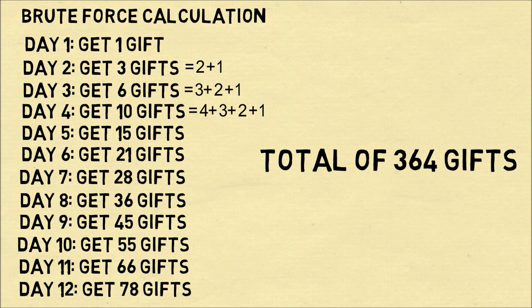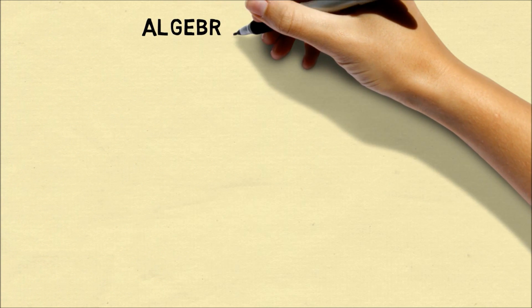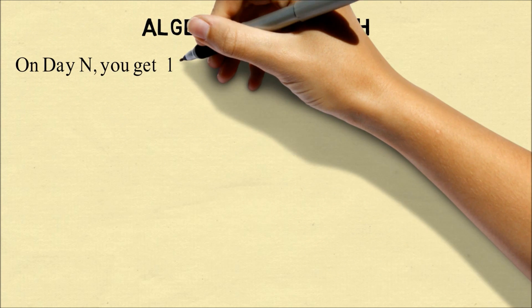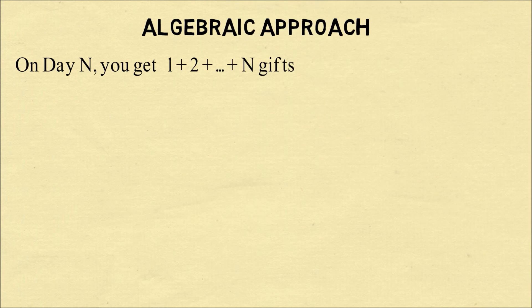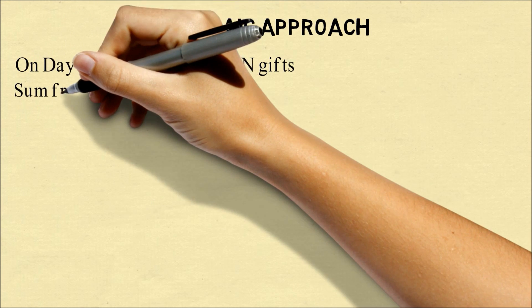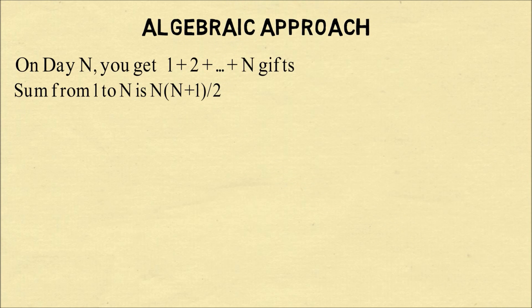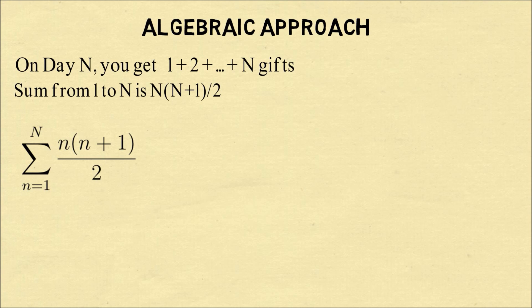That gets us an answer, but it doesn't really tell us anything if we want to generalize the problem. So we'll need to do an algebraic approach if we want to generalize it to n days. We know that on day n we get one plus two plus all the numbers up to n gifts. So we can summarize that on day n we actually get n times (n plus one) over two, because the sum of the numbers from one to n is n times (n plus one) over two.